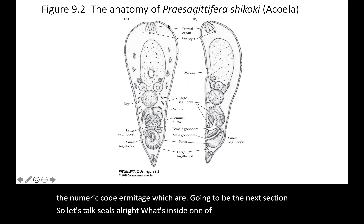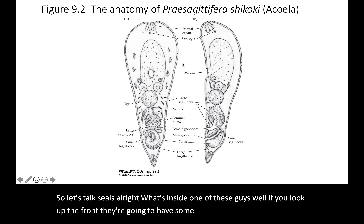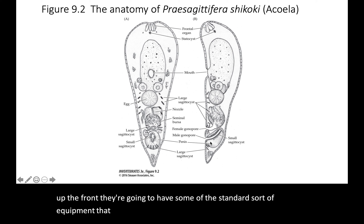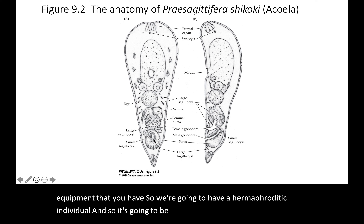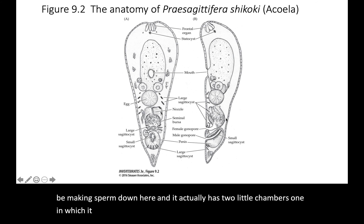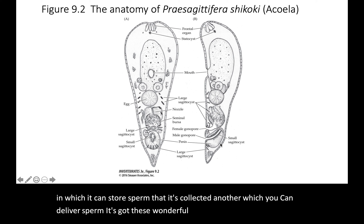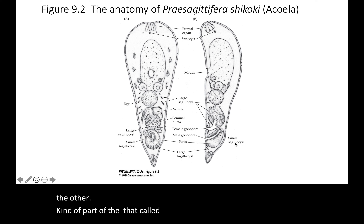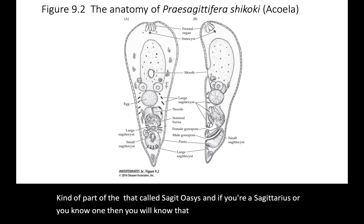What's inside one of these animals? Up at the front you have standard equipment. It's a hermaphroditic individual, so it's making eggs up here and sperm down here. It actually has two little chambers — one in which it can store sperm it's collected, and another from which it can deliver sperm. And it has these wonderful little cells called sagittocysts right next to — kind of part of — the penis.